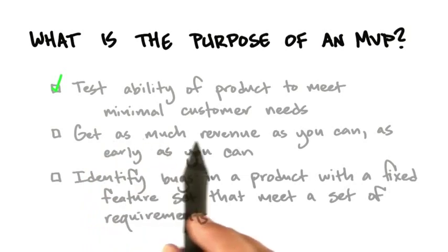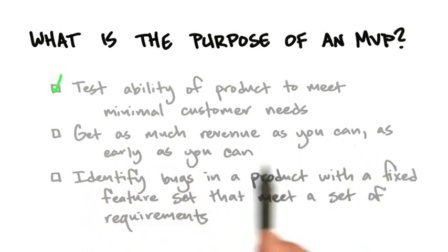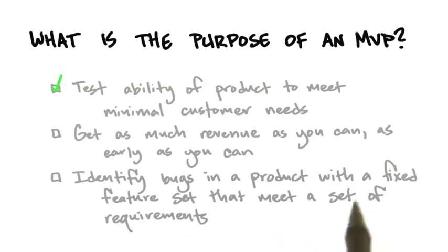It's not how to get as much revenue as you can as early as you can. You might decide that's a strategy, but that's kind of counter to learning from an MVP. You typically only make this choice when you actually feel pretty certain that you understand product-market fit. And while we certainly want to identify bugs in a product, hopefully if we've been using an agile methodology, we've squashed most of them before they've gone out the door.